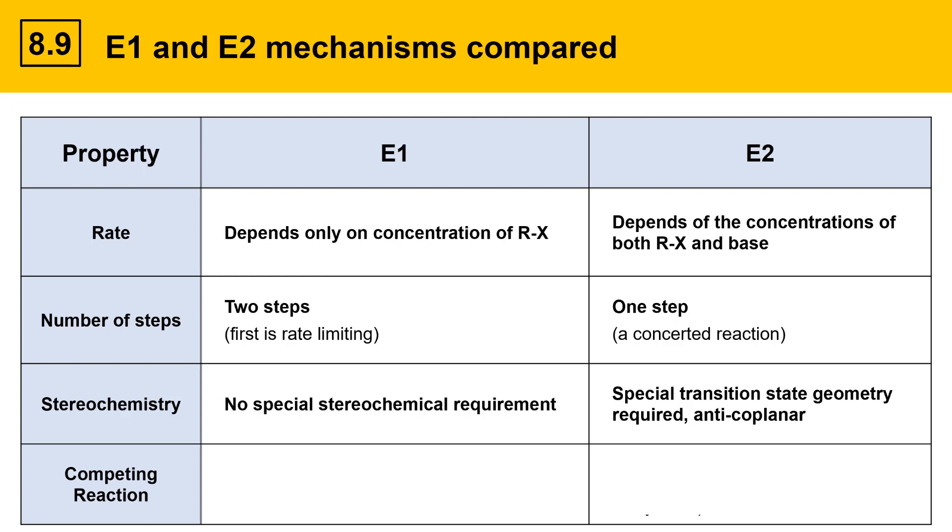Next, on to competing reactions. The E1 reaction has SN1 reactions competing with it, and this is always an issue. The reason is they share a common carbocation intermediate that could either get deprotonated to form an E1 product, or be attacked by a nucleophile to form an SN1 product. For E2, SN2 reactions do compete, however, substitution can be minimized by using a bulky base. The selection of the base can make a difference and allow for selective formation of elimination products over substitution products.